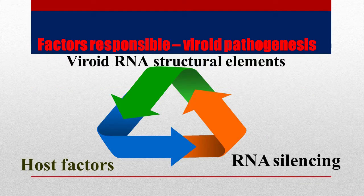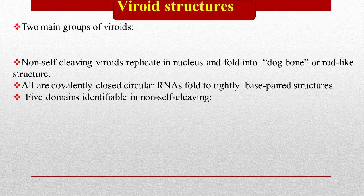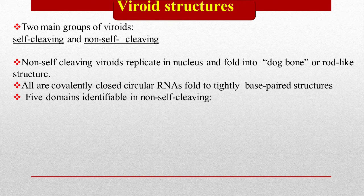There are three factors responsible for viroid pathogenesis: first, viroid RNA structural elements; second, host factors; and third, RNA silencing. Two main groups of viroids exist: self-cleaving and non-self-cleaving. Non-self-cleaving viroids replicate in the nucleus and fold into a dog-bone or rod-like structure.